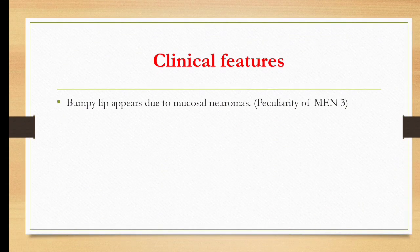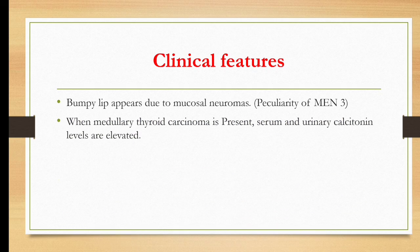Regarding clinical features: bumpy lips appear due to mucosal neuromas. Mucosal neuromas can be seen with MEN1 and MEN2, but with MEN3 they are the typical and peculiar finding.